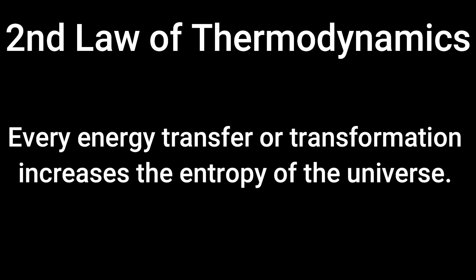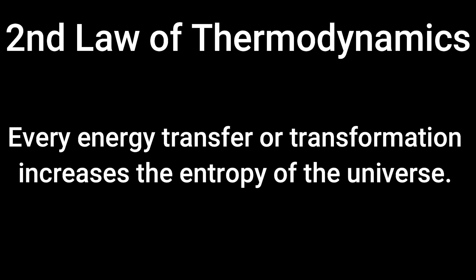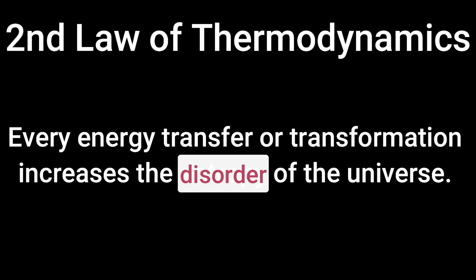The second law of thermodynamics may be one that you have not heard of before. It states that every energy transfer or transformation increases the entropy of the universe. Entropy can be thought of as disorder or randomness, so whenever an energy transfer or transformation happens, the disorder of the universe increases. This is the natural tendency of the universe — it doesn't like to increase order.